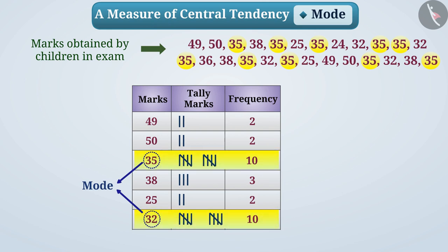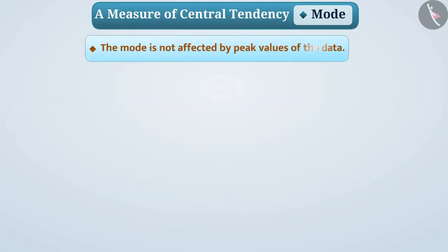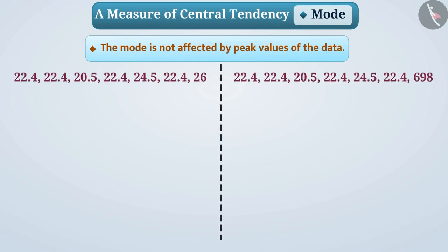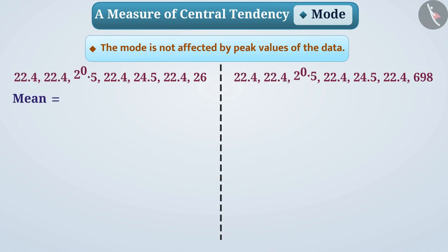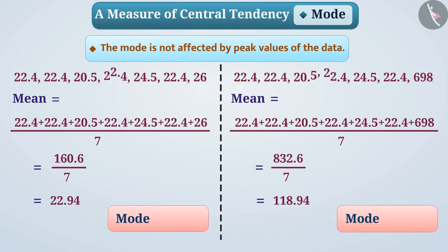Let's understand the characteristics of mode. The mode is not affected by peak values of the data. Look at these 2 groups of data — in the second group, the peak value is 698, which is extremely large. If we find the mean of each group, we see that the extreme value 698 causes changes in the mean. But if we find the mode of these 2 groups, it is 22.4 for both. You can see that mode is more suitable here than the mean to represent central tendency.